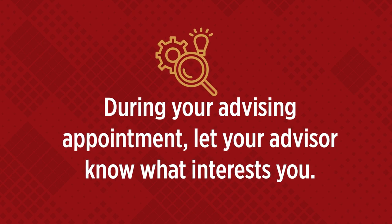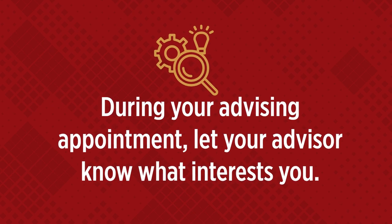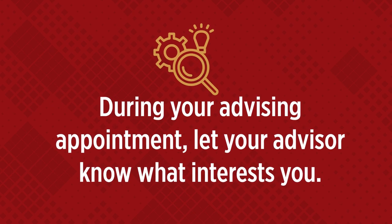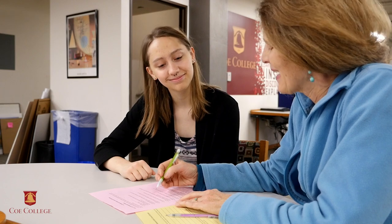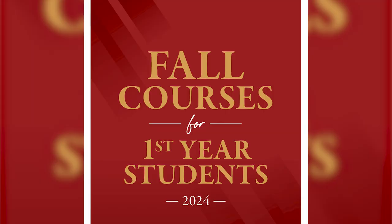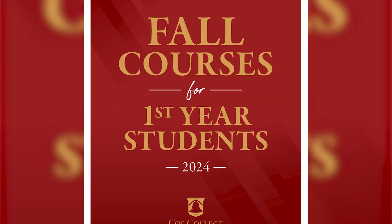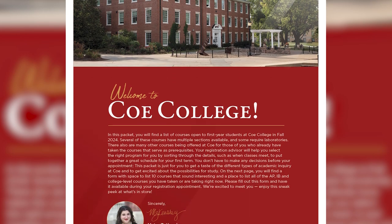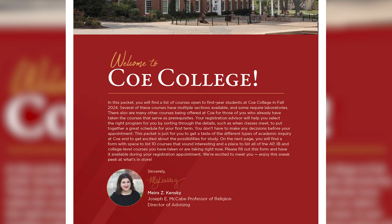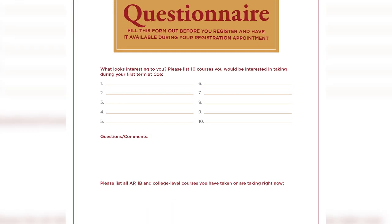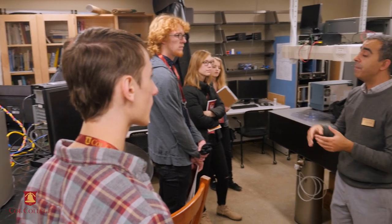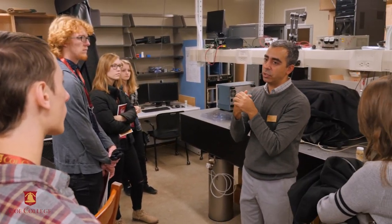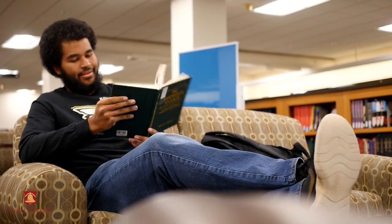One: during your advising appointment, let your advisor know what interests you. Your faculty advisor is excited to learn what types of classes appeal to you the most. Before your advising appointment, look through the Courses for First Year Students booklet that was emailed to you. Use the questionnaire to write down at least 10 courses you're interested in taking and have the booklet and your list available during your registration appointment.